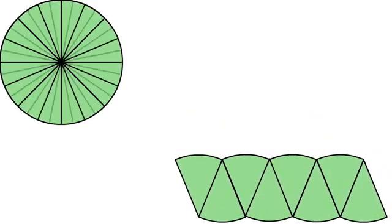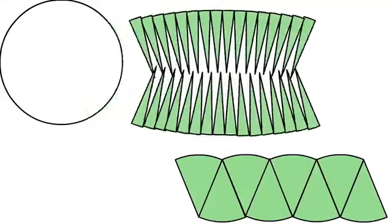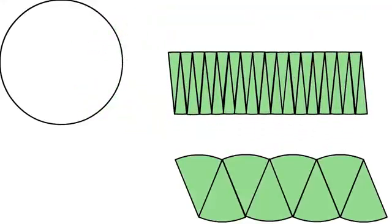So next we will divide the circle into small equal pieces and we will arrange them in the same manner. You can see that it appears more like a rectangle.